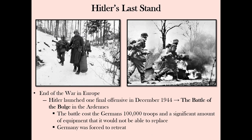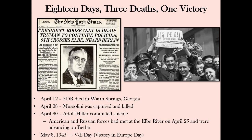Hitler launched his final offensive into Belgium at Ardennes in the winter of 1944. This costly attack resulted in almost 100,000 casualties for both sides, forcing Hitler's army to retreat back toward Berlin. In an 18-day period in April 1945, three world leaders died as the war in Europe came to an end. Franklin Roosevelt died in Warm Springs, Georgia on April 12th. On April 28th, Benito Mussolini was captured, shot, his body thrown in the street, urinated on and stoned, then hung by his feet and buried in an unmarked grave. On April 30th, five days after American and Soviet forces met at the Elbe River, Adolf Hitler committed suicide in a bunker in Berlin. On May 8th, Germany surrendered. The war in Europe was over.